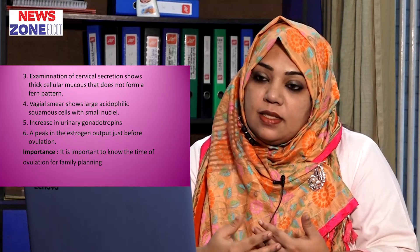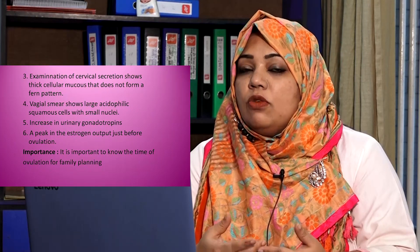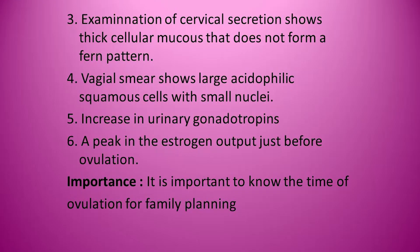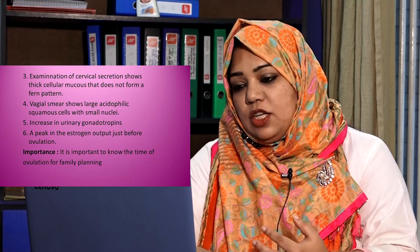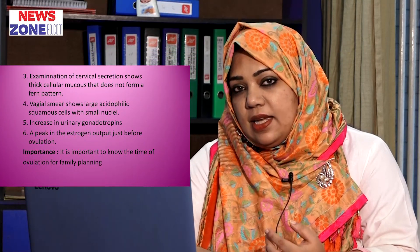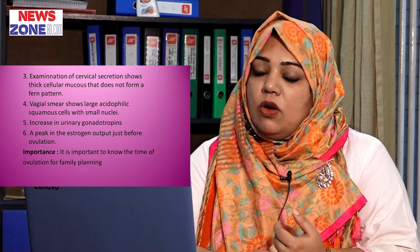If we examine the vaginal smear, we will find large squamous cells that are acidophilic with small nuclei. There will also be an increase in urinary gonadotropins — we can measure the urine and see the elevated levels of gonadotropins. Additionally, there is a peak in the estrogen output just before ovulation. These are the indicators we follow to see whether a person is ovulating or not.